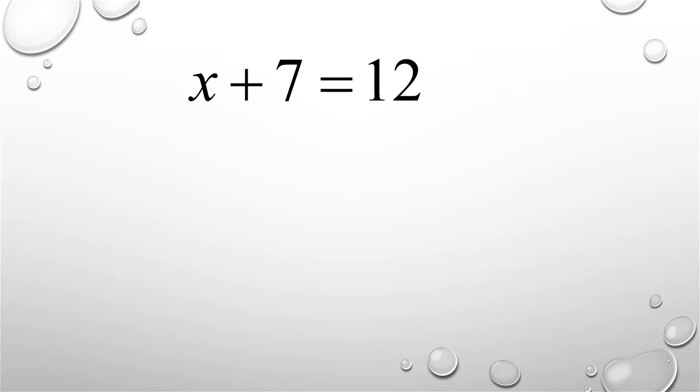Here we have x plus 7 equals 12. So the subtraction property of equality says that I can subtract the same number from both sides. In this case, I want to subtract 7.